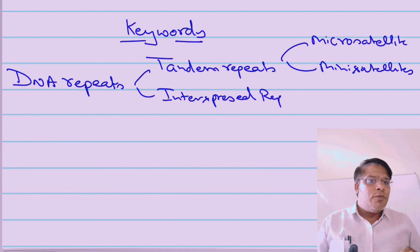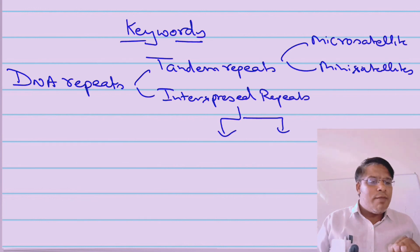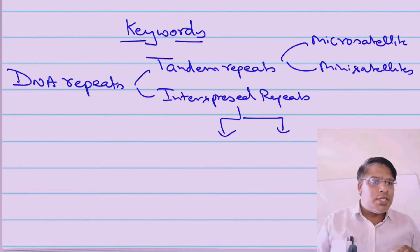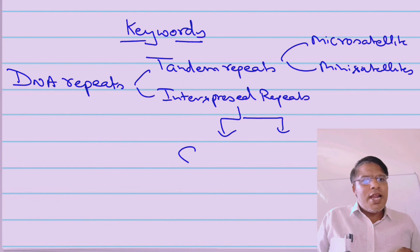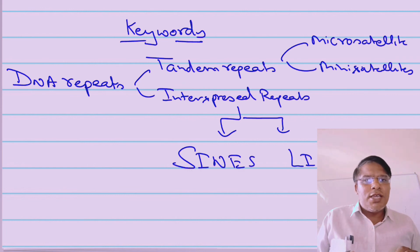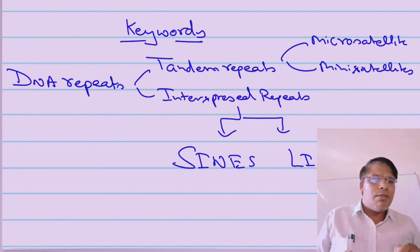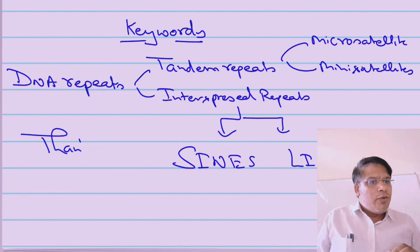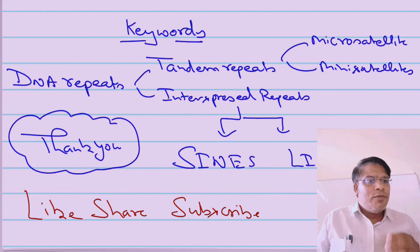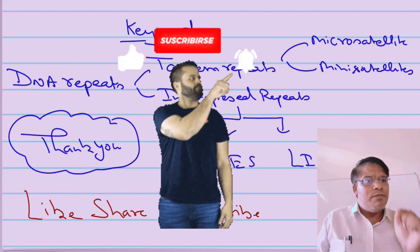Hopefully within this video you have clearly learned about DNA repeats. We discussed tandem repeats and interspersed repeats. Tandem repeats can be of two types: microsatellites and minisatellites. Interspersed repeats can be of two types: SINEs (short interspersed repeats) and LINEs (long interspersed repeats). Thank you for watching — please do share the video and subscribe to my channel Deep Learning Biology.